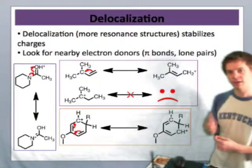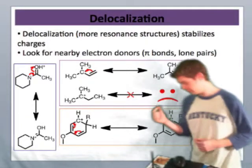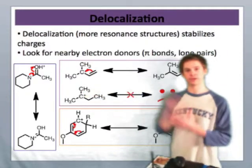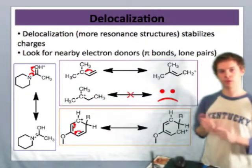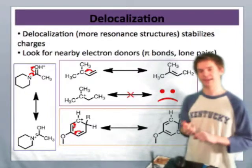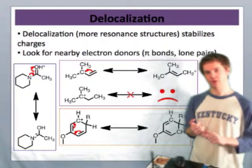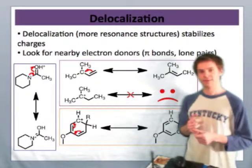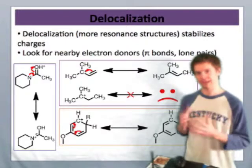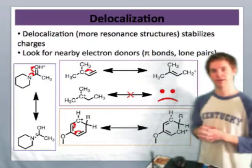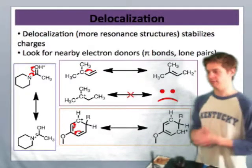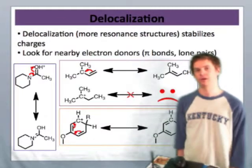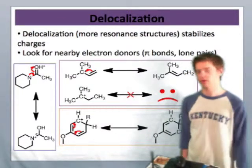Experimental results have borne this out. From experimental results, we can tell that the protonated amide is less acidic than a protonated ketone or a protonated ester. This suggests that the amide is more stable as the cation — it's less willing to give up its positive charge and become neutral again, whereas the more reactive, less stable protonated carbonyls are less willing to hold on to their positive charge.